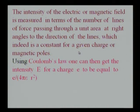Now, the intensity of the electric or magnetic field is measured in terms of the number of lines of force passing through a unit area at right angles to the direction of the lines, which is a constant for a given charge or magnetic poles. Using Coulomb's law, one can then get the intensity E for a charge e to be equal to e upon 4π epsilon r squared.